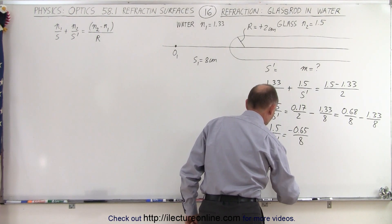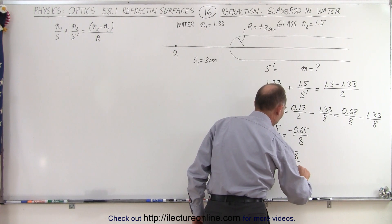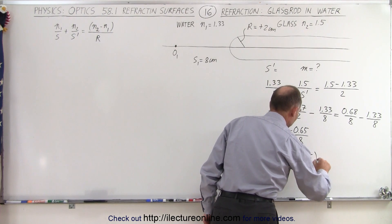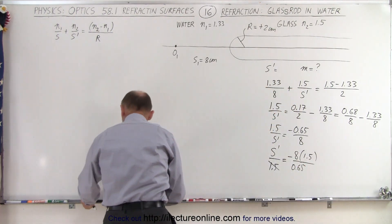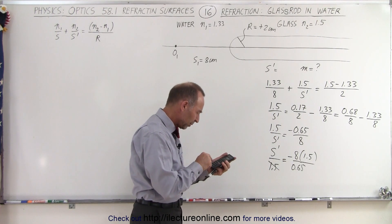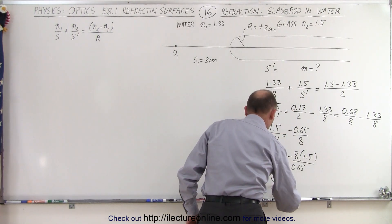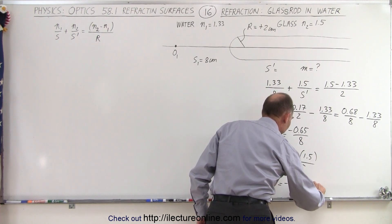So you can see: s prime over 1.5 is going to be equal to minus 8 over 0.65. Move the 1.5 over here to the numerator, we're going to put minus 12 over 0.65, and my calculator is over here. 12 divided by 0.65, that's 18.46, a negative. So s prime is equal to minus 18.46 centimeters.